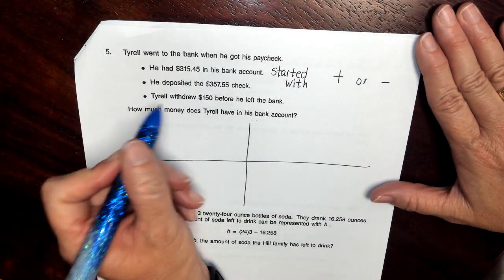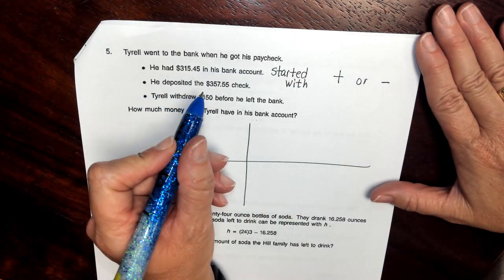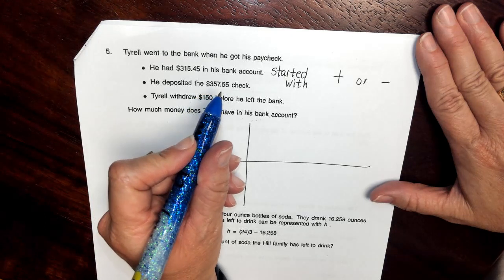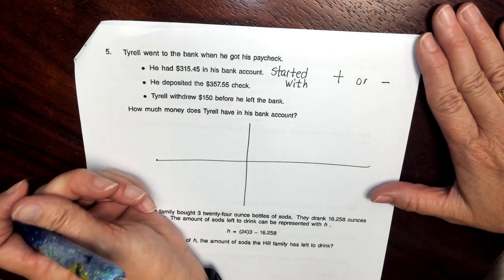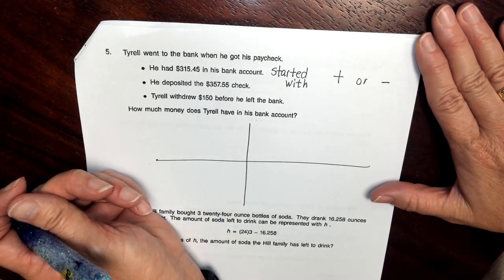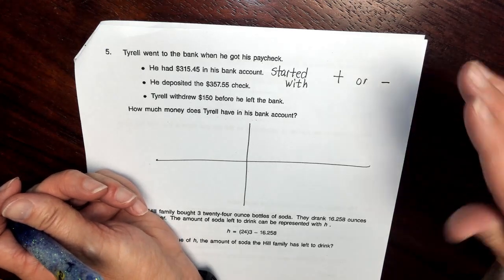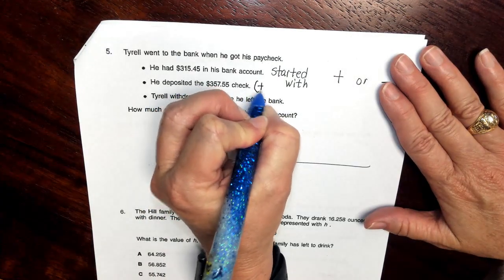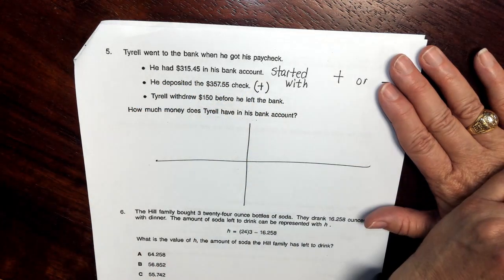The next statement says that he deposited his $357.55 check. So what happens when you deposit something? Well, you're adding to. So we're going to add this amount to the part that he already had.